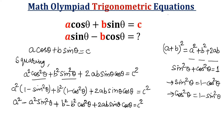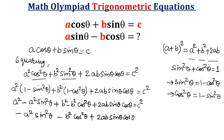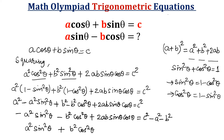Now let us take all the constant terms to the right side — that means a² and b². The equation becomes: minus a² sin²θ minus b² cos²θ plus twice ab sinθ cosθ equals c² minus a² minus b². Now multiplying the entire equation by minus one: a² sin²θ plus b² cos²θ minus twice ab sinθ cosθ is equal to a² plus b² minus c².